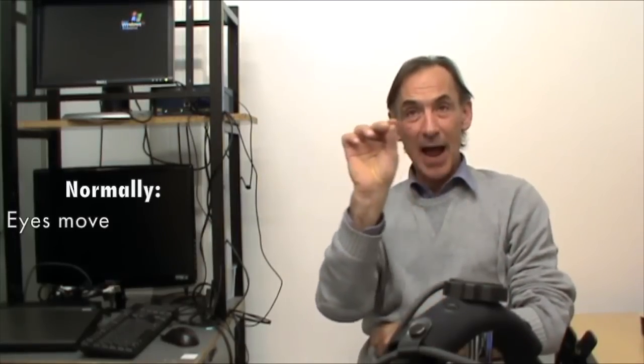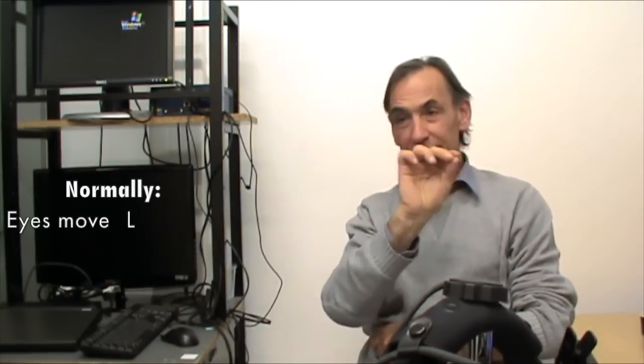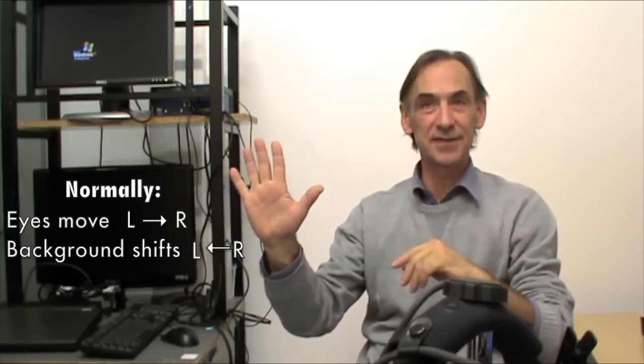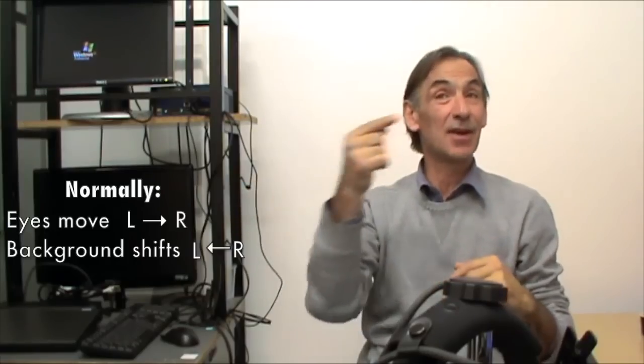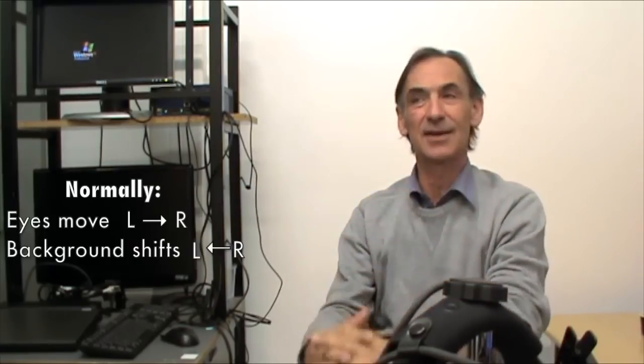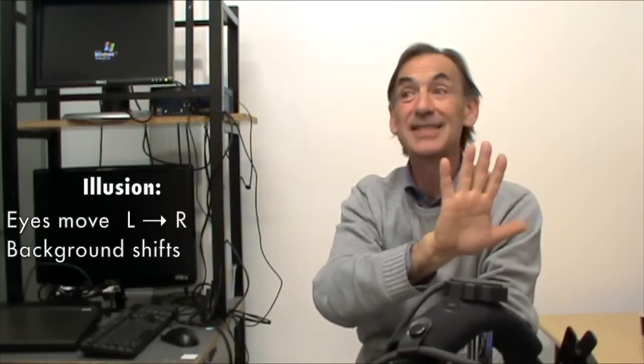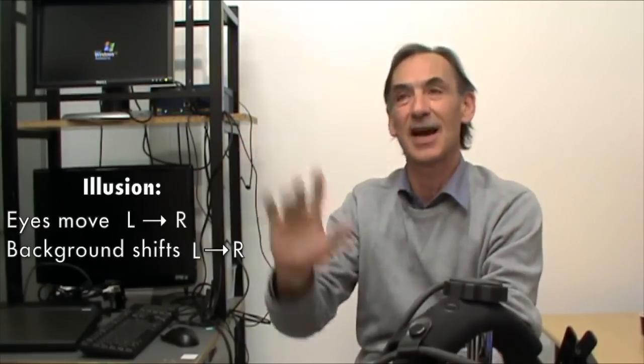This is the core of the story and it is slightly difficult to understand. Normally, if I move my eyes from left to right, the background, which is static, is moving from right to left. So it shifts on the retina but in the direction opposite to that of the eye. The illusion is such that if you move the eyes from left to right, the visual world, the background, which is static, appears to move with the eye.